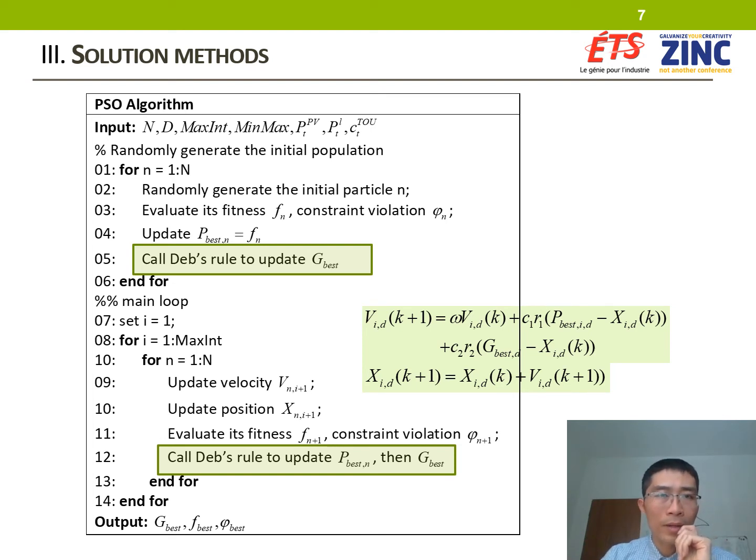After that, the main for loop will update the particle velocity and position, and then update the personal best and global best by calling the Deb's rule algorithm. That will be repeated until reaching the maximum iteration number. The output is the best solution.